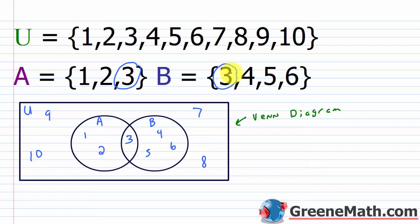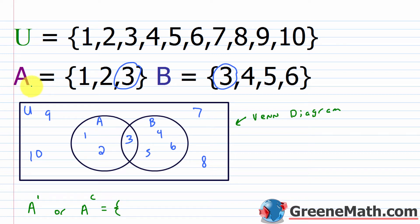Now let's talk about the complement of a set. If I want the complement of A, I write A prime or A superscript C — A complement. A complement contains all elements of set U that are not elements of set A. Since set A has 1, 2, and 3, I exclude those and the complement of A is 4, 5, 6, 7, 8, 9, and 10.